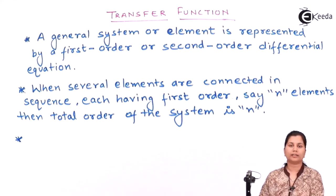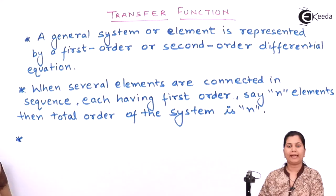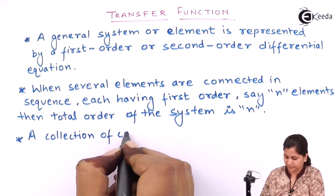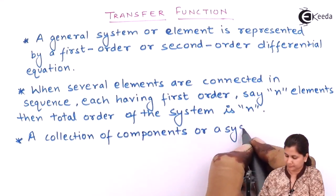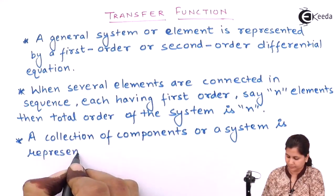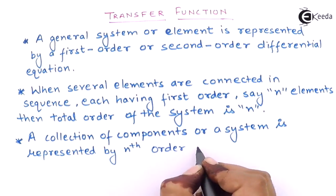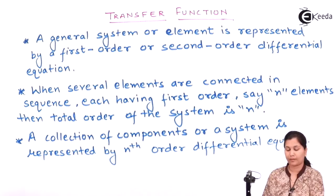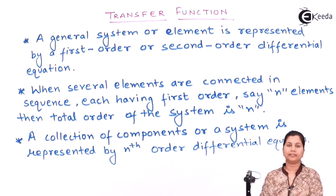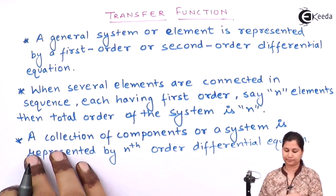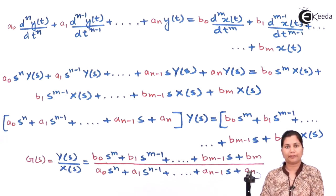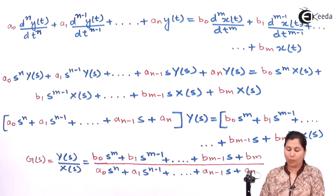A system or a collection of components is represented by an nth order differential equation. If we represent a system by the differential equation, it will be given by this nth order differential equation of a system, where y(t) is the output and x(t) is the input.